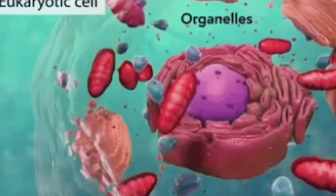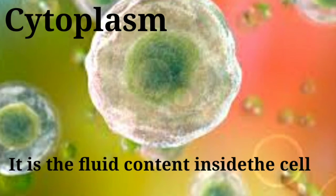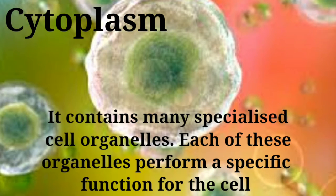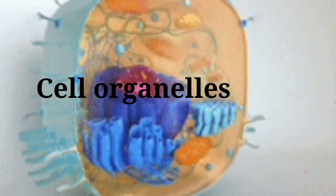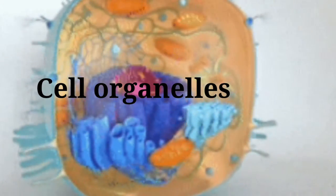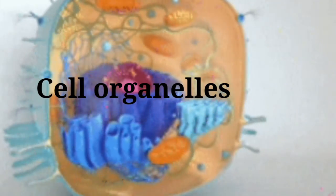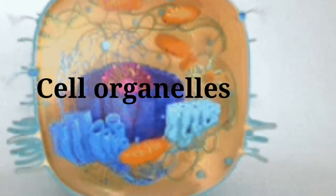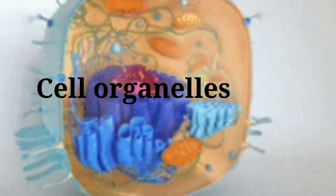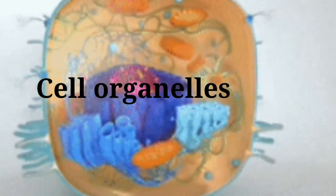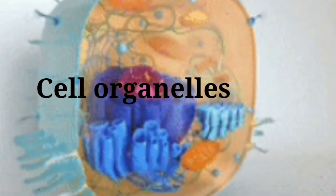The next part of the cell is the cytoplasm. The cytoplasm is the fluid content inside the plasma membrane. It also contains many specialized cell organelles. Each of these organelles performs a specific function for the cell. Every cell has a membrane around it to keep its content separate from the external environment. The different components of the cell perform different functions and these components are called cell organelles.